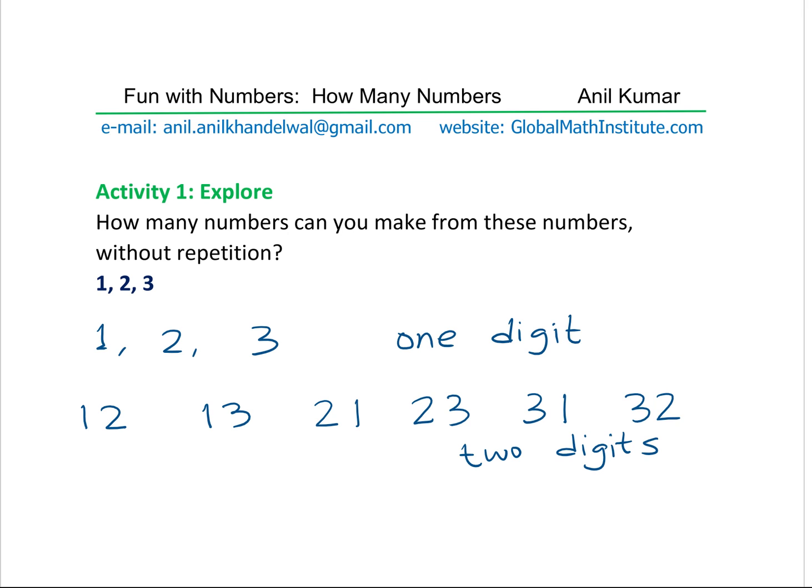Well, we can also make 3 digit numbers. Let us see. How? Number 1, 2, 3 itself. That is starting with 1 and then writing 2 and 3. I can reverse this order, right? I can also write this number as 1, 3 and 2. Yes. We could begin with 2 and write a number 2, 1, 3. And we can reverse the order and write as 2, 3, 1. Let us also write numbers starting with 3 as 3, 1, 2 and 3, 2, 1.